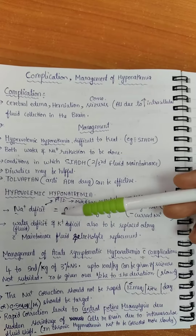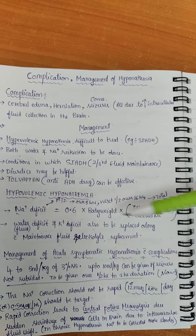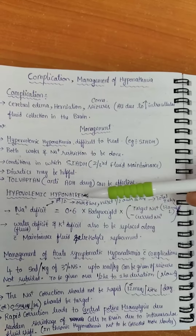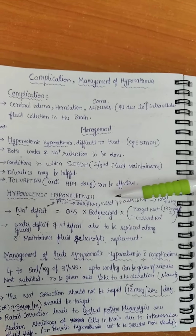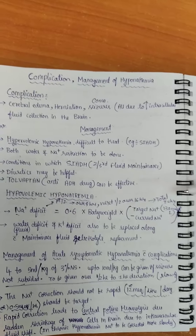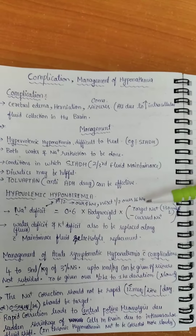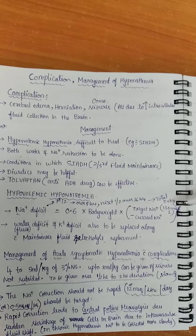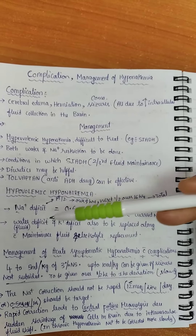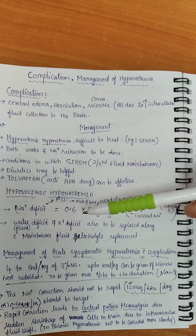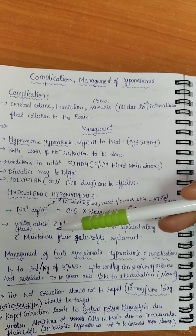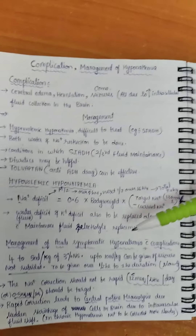This calculated deficit should be given in two halves — the first half over 8 hours and the next half over 16 hours, so the total should be given over 24 hours, not less than that. Along with the sodium deficit, water deficit and potassium deficit should also be replaced along with maintenance fluid and electrolyte replacement.